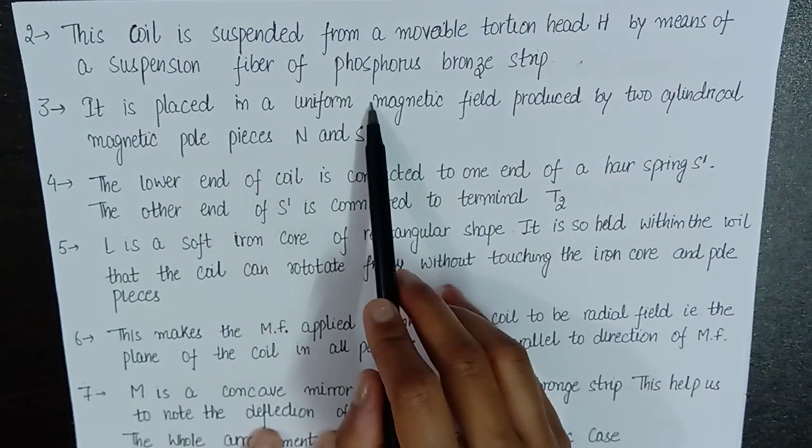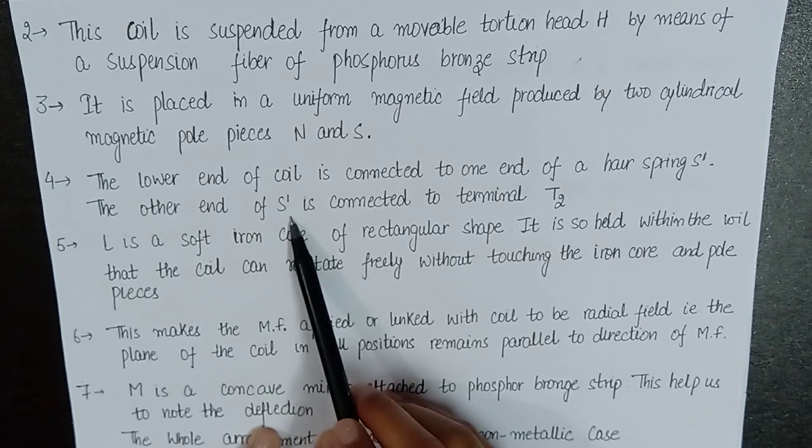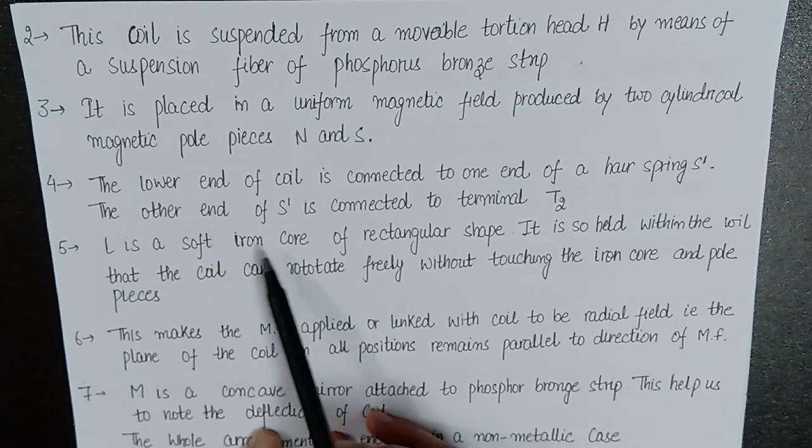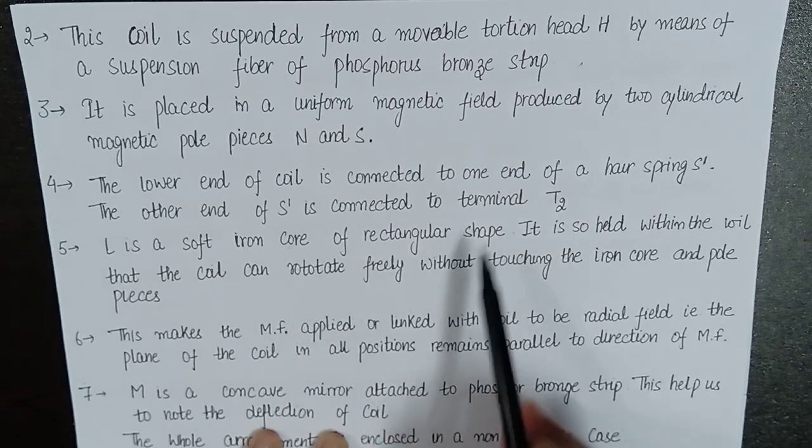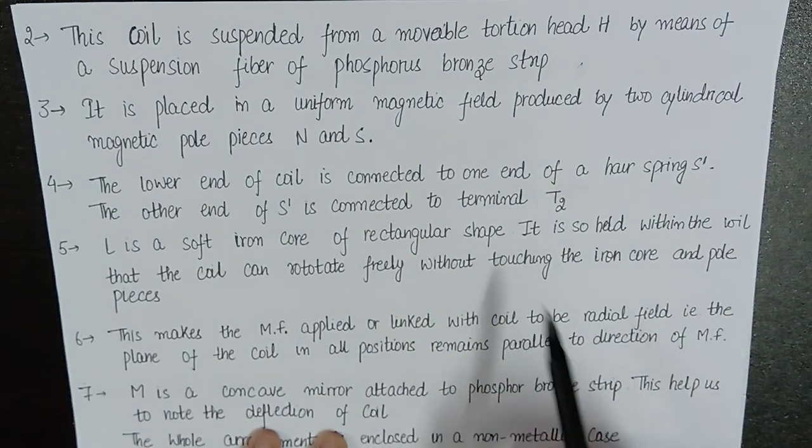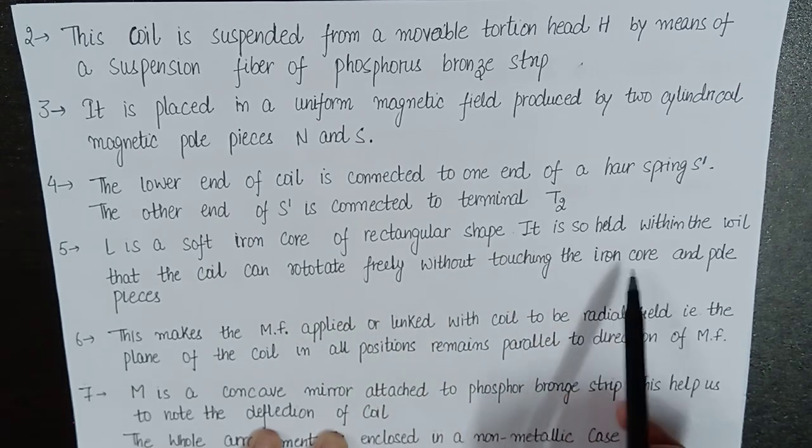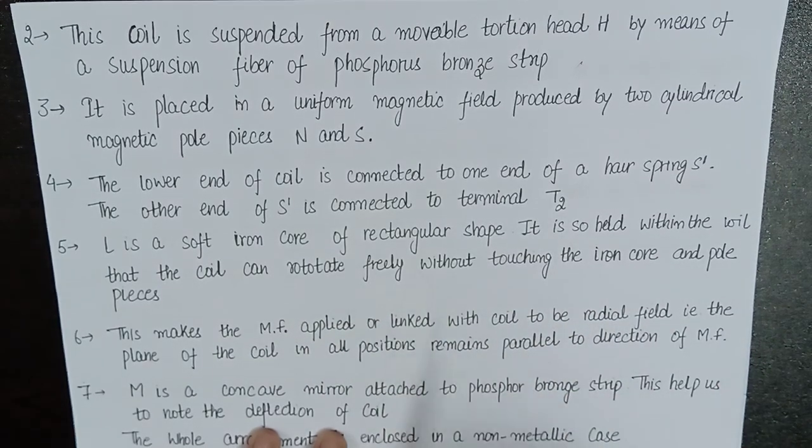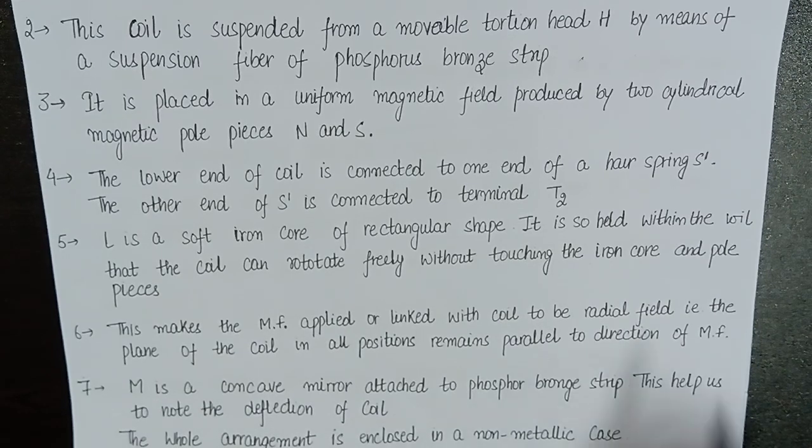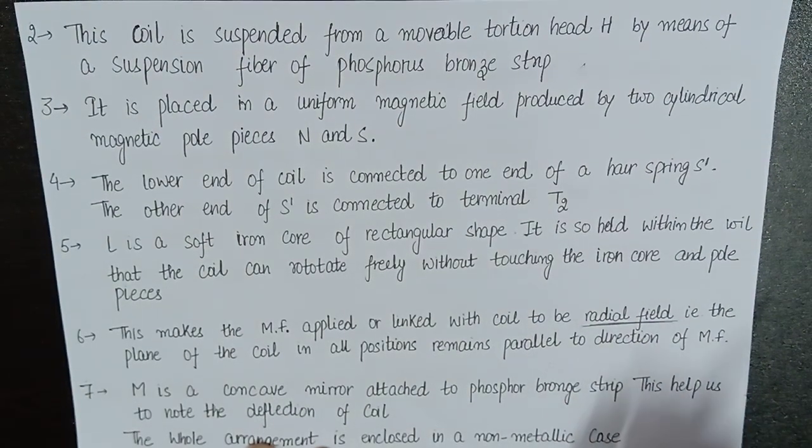So in this part I have written in construction and I have told you that the coil is suspended by a movable torsion head by means of a suspension fiber of phosphorous and bronze. It is again placed in magnetic field and the lower end is connected to the hair spring S dash and the other end is connected to the terminal T2. And L is a soft iron core which is rectangular shape.